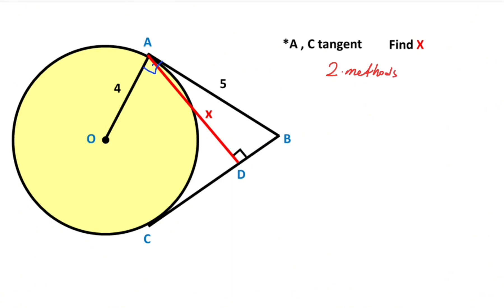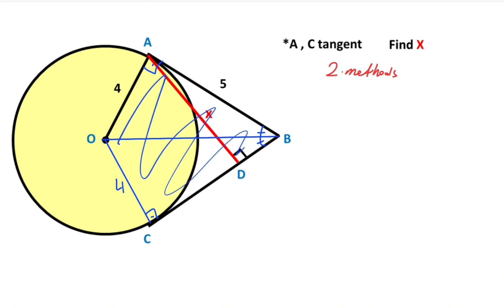Now we will calculate the value of x using the second method. We know there is a 90-degree angle because of the tangents. If we connect point O and point B, we get an angle bisector line. Drawing a perpendicular line from the center, this length is also the radius. Focusing on this quadrilateral, it is a kite.